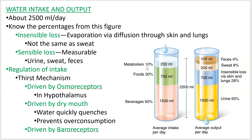If you remember, during cell respiration at the end there was the electron transport chain, which included a step where oxygen received the final electron from that whole passage, then grabbed a couple of hydrogens — and there you have water. This is called metabolic water, and you make it in your cells.